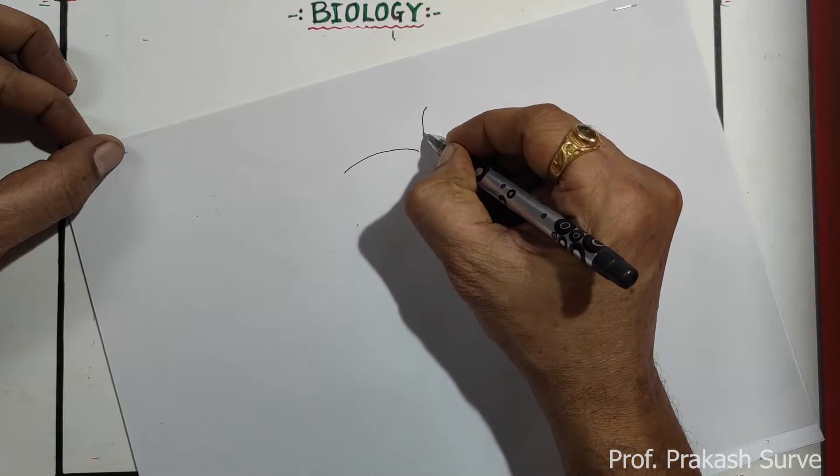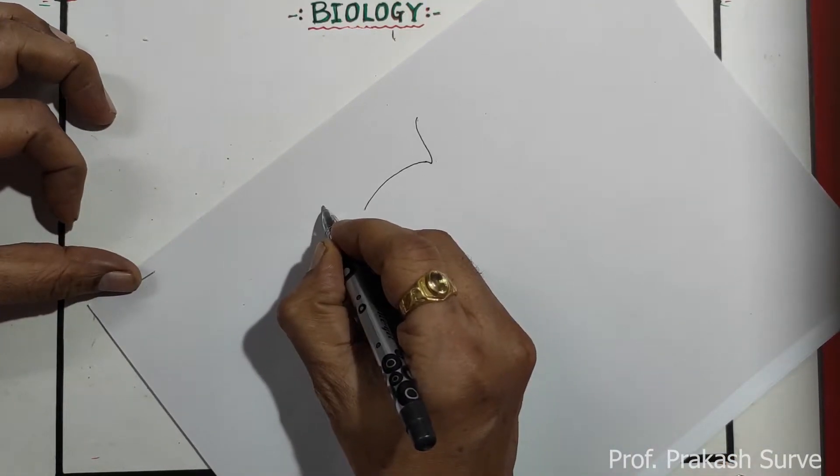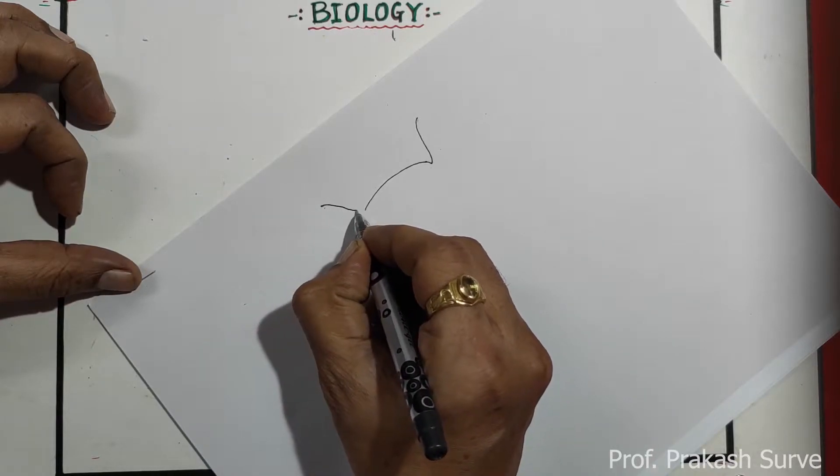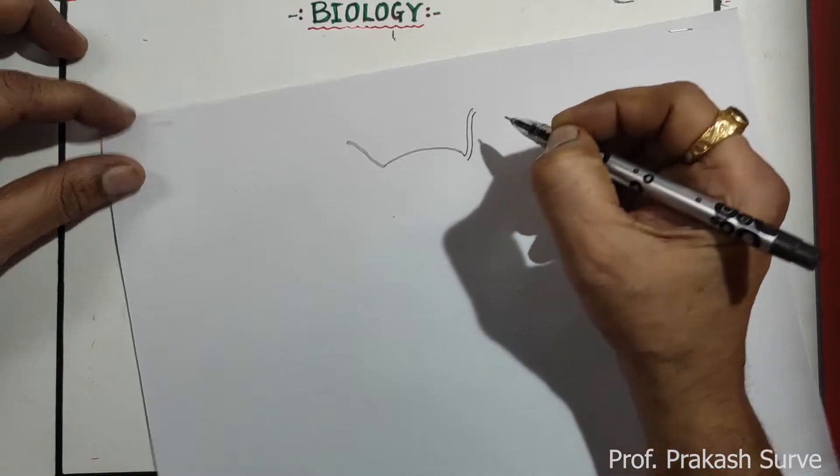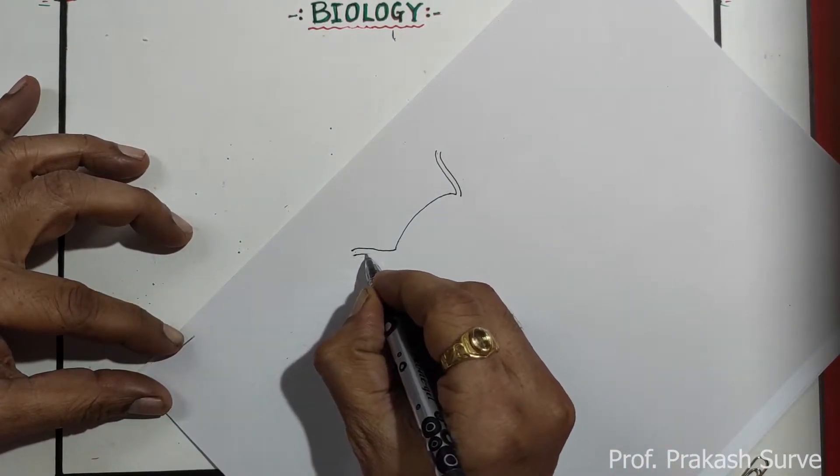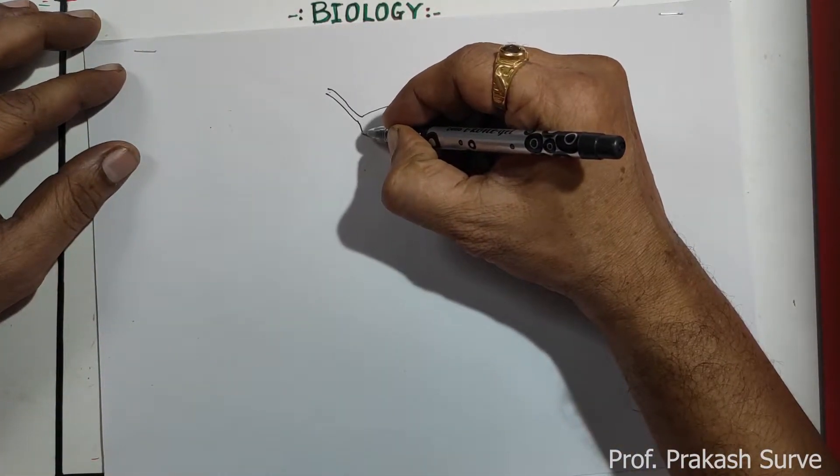Now here one line for the ureter, same way from here also, so this will go for the ureter. Now bring it down.